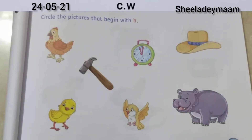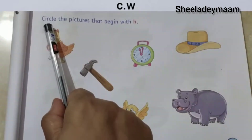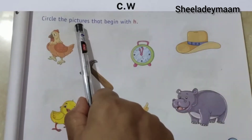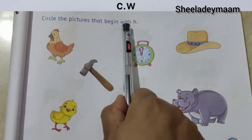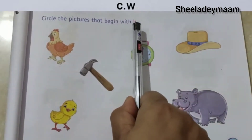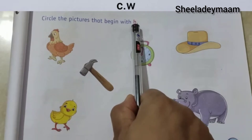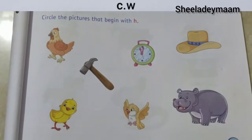Our question is: circle the pictures that begin with the letter H. We have to circle those pictures that begin with the letter H.